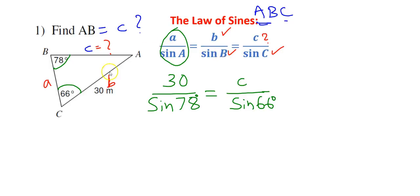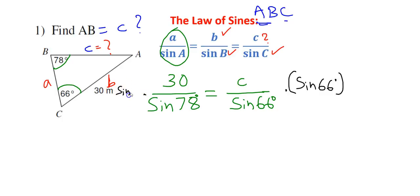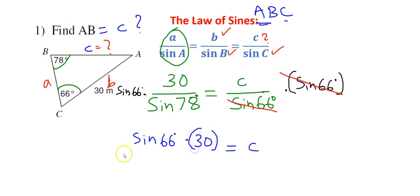Now let me substitute the values. b is 30 meters, so I write 30 over sin B, which is sin 78 degrees. That equals c over sin C, which is sin 66 degrees. To find the value of c, the easiest way is to multiply both sides by sin 66 degrees.